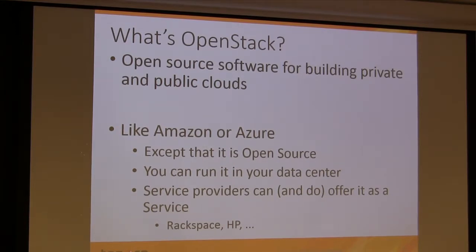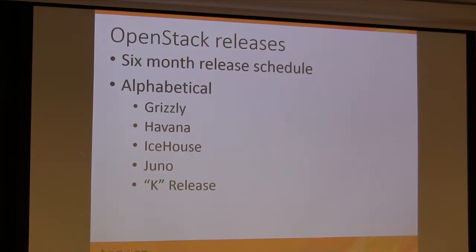What's OpenStack? Open source software for building private clouds — like Amazon and Azure, except that it works some of the time. It's also open source, and you can run it in a private cloud. A couple of service providers offer it as a service, HP and Rackspace primarily. In terms of releases, I'll be mentioning Ice House, Juno, and the K release, which has no name yet.